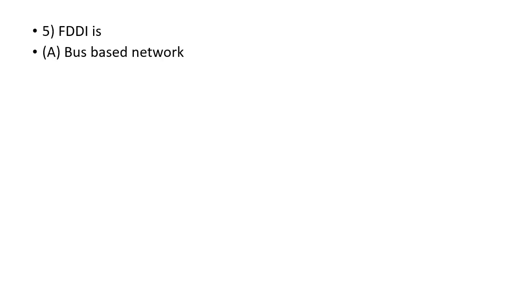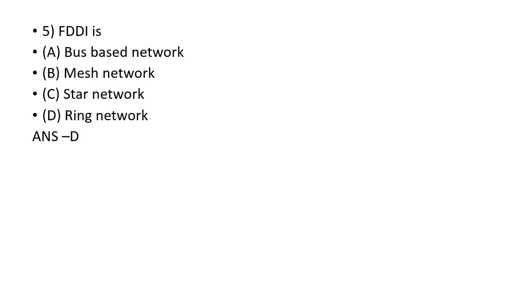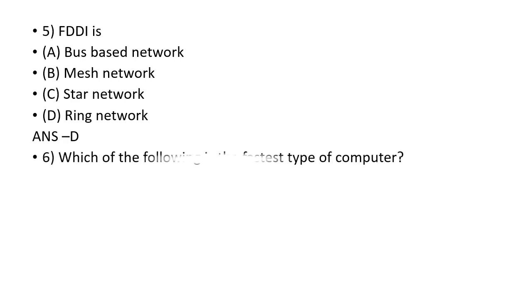FDDI is a dash. FDDI is a ring network. Which of the following is the fastest type of computer?